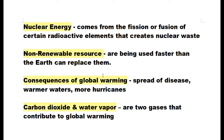Consequences of global warming include spread of diseases, warmer waters, and more hurricanes — it unbalances the earth. Carbon dioxide and water vapor are the two gases that contribute to global warming.